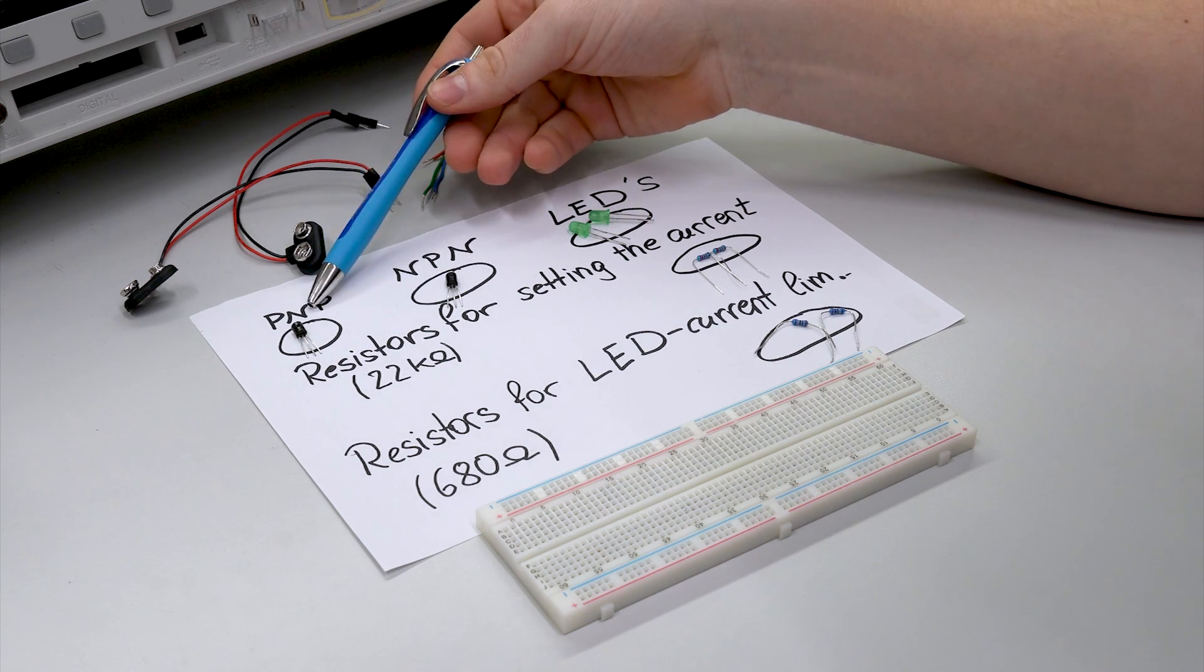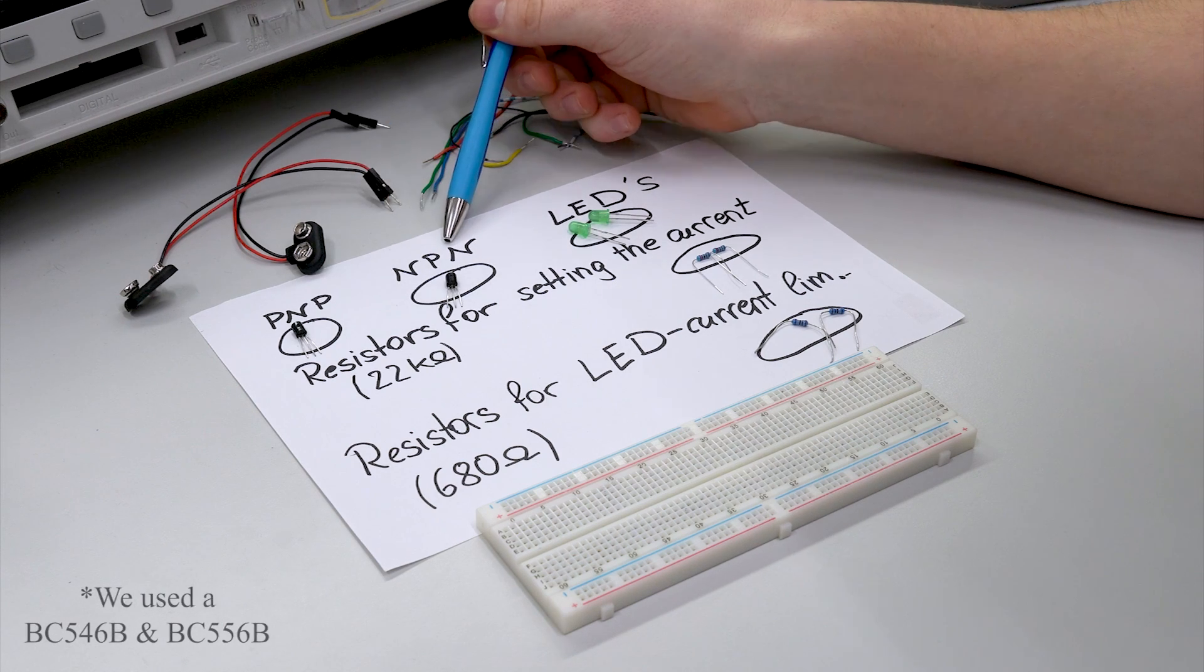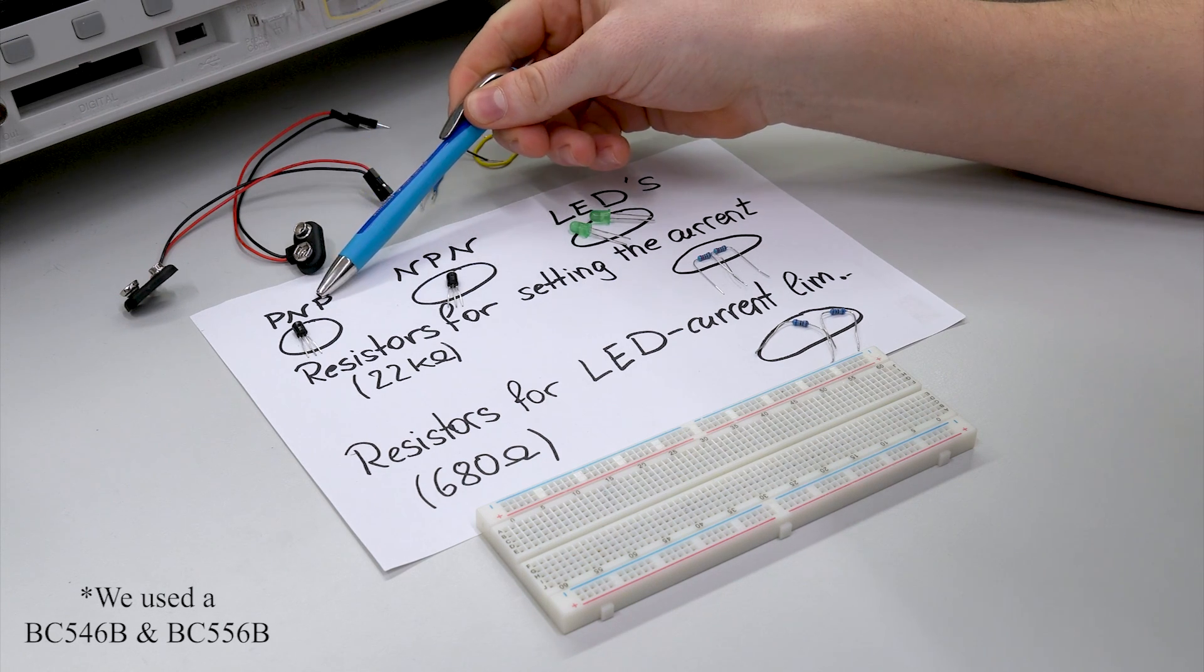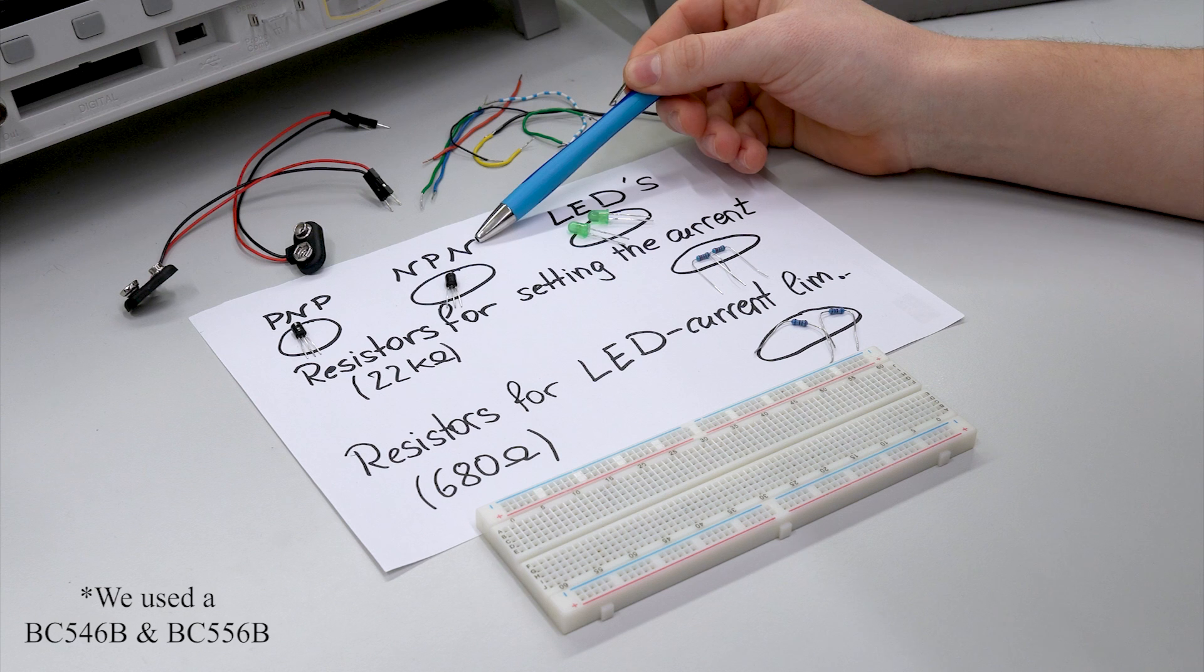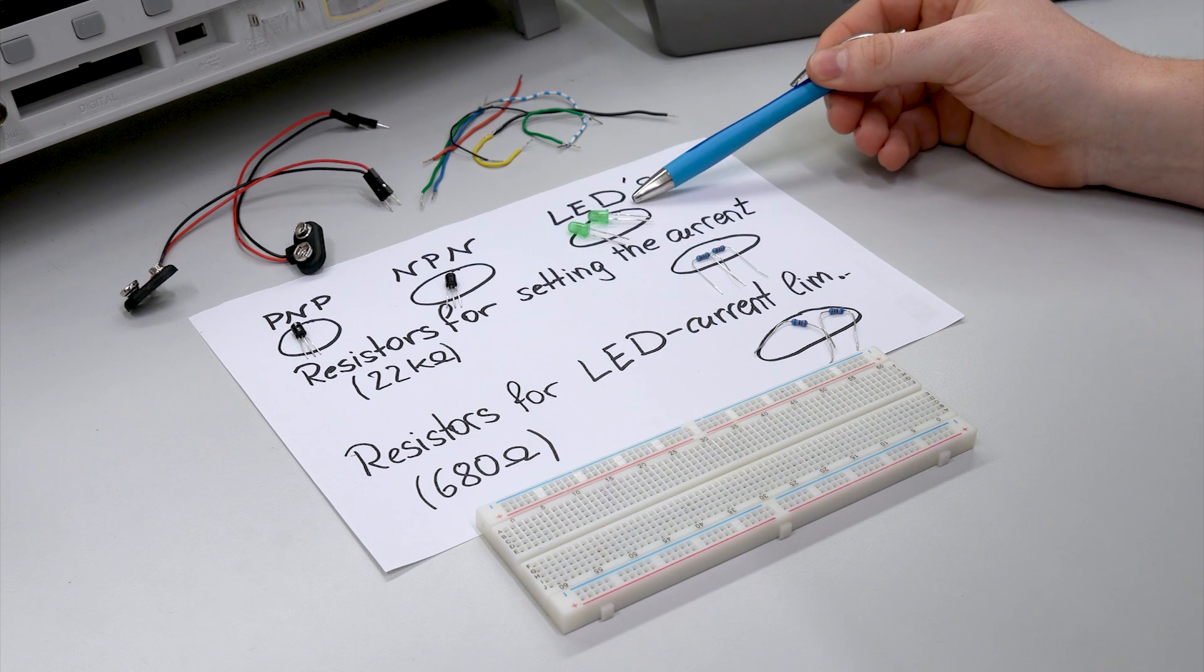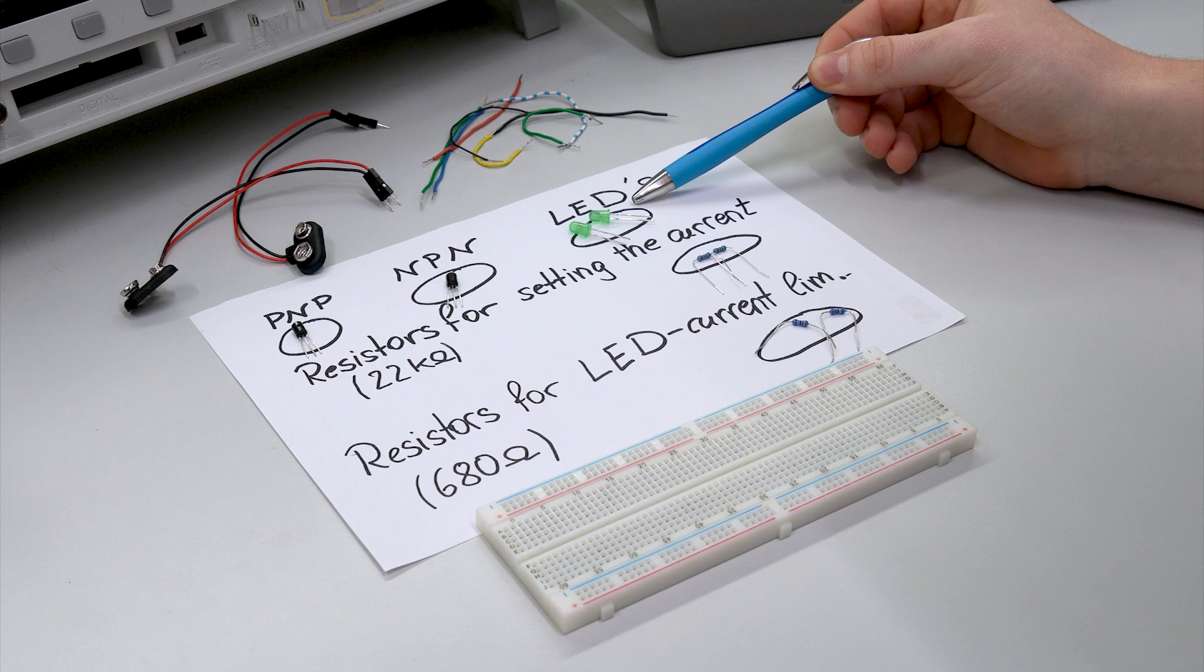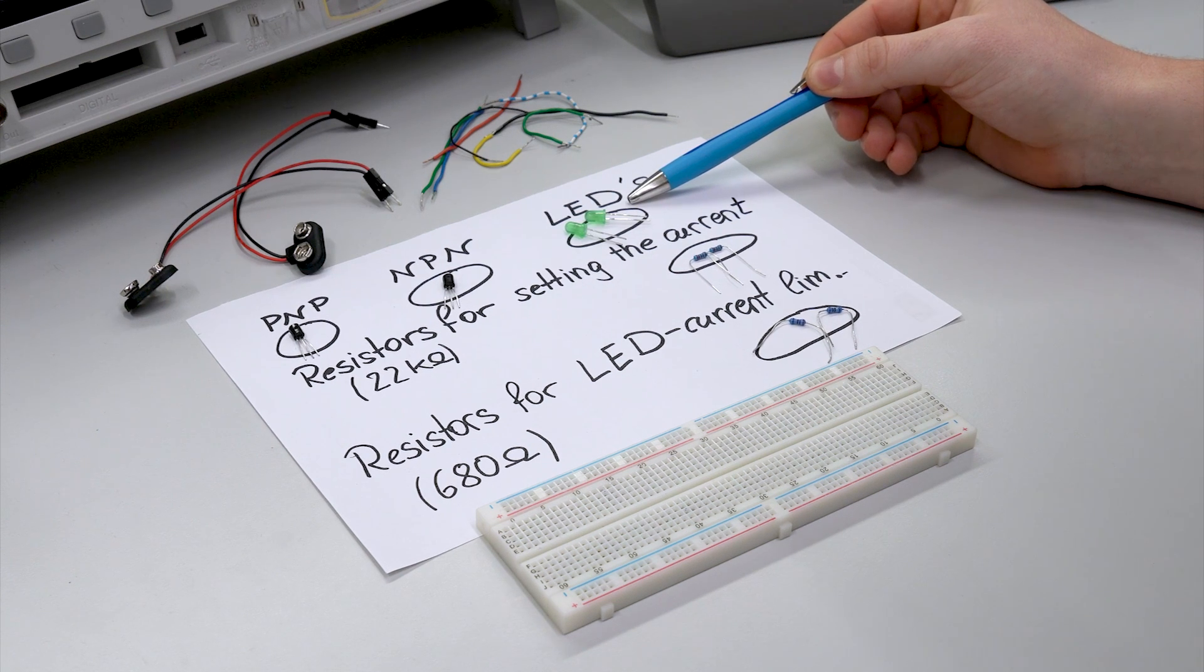First of all there are the two transistors, PNP and NPN transistor. PNPs for the positive supply and the NPN for the negative supply. There are the two LEDs. Those should indicate if either the positive or the negative supply overcurrent protection is triggered.